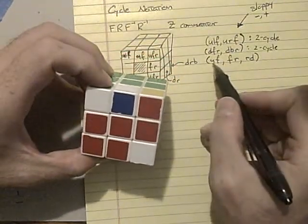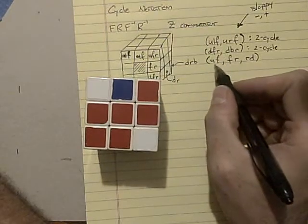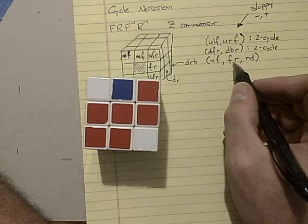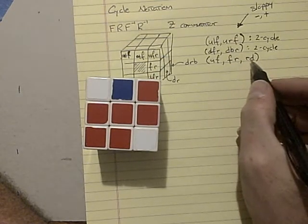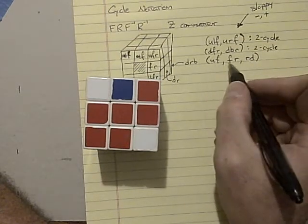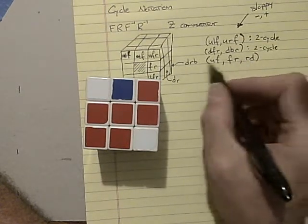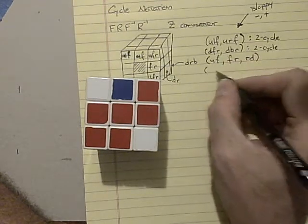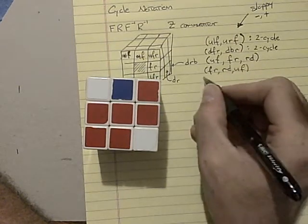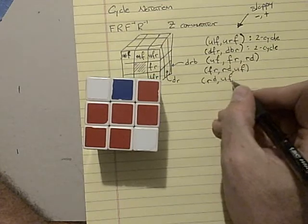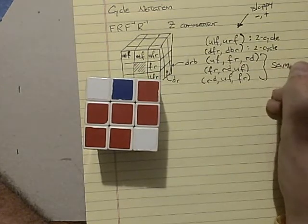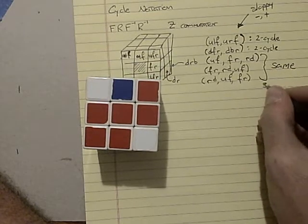So this is a three cycle. And what this says is that the up front piece went to the front right spot. And that piece went to the right down spot. And the right down spot went to the up front spot. That's why it's a cycle. It doesn't matter what order you write this in. So this is the same as writing F, R, R, D, U, F, or the same as R, D, U, F, F, R. These are all the same. And there are three cycles.